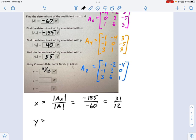Let's do Y. Y equals the determinant of matrix AY, divided by the determinant of A. And according to our numbers up top, that's going to be 40 divided by negative 60. So in other words, negative two-thirds.